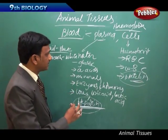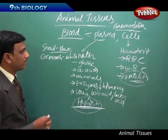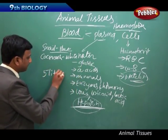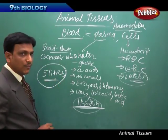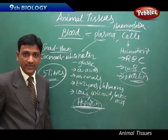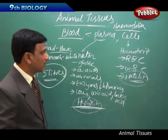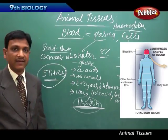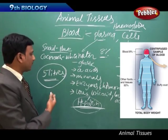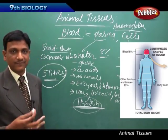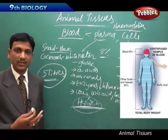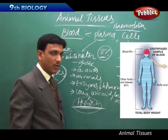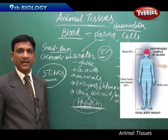An adult human will have about 5 liters of blood, but this depends on body weight — approximately 8% of body weight. The 5 liters is for a person who weighs around 70 to 72 kilograms. If your weight is less, you can calculate your blood volume by taking 8% of your body weight.